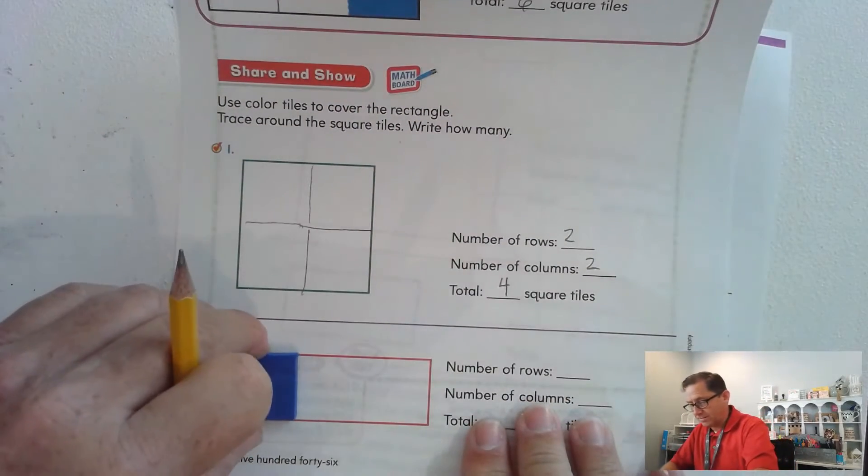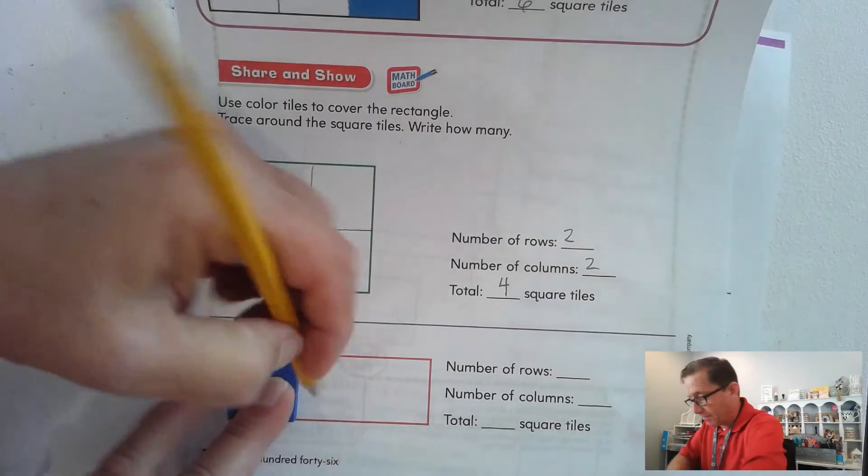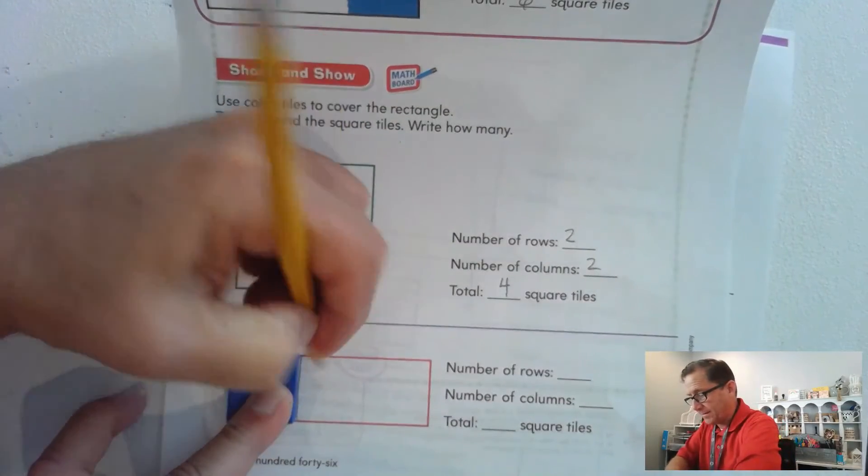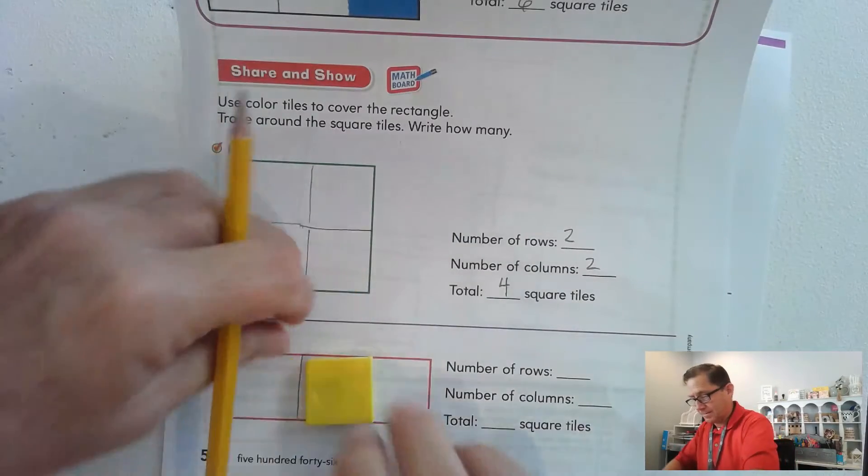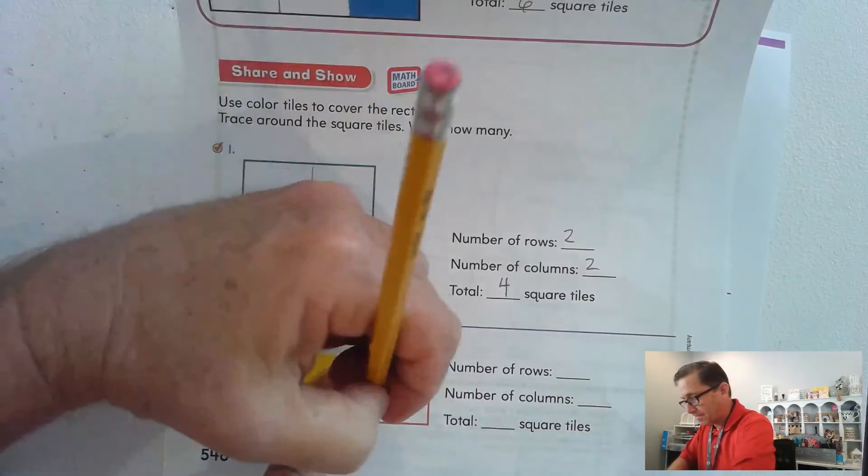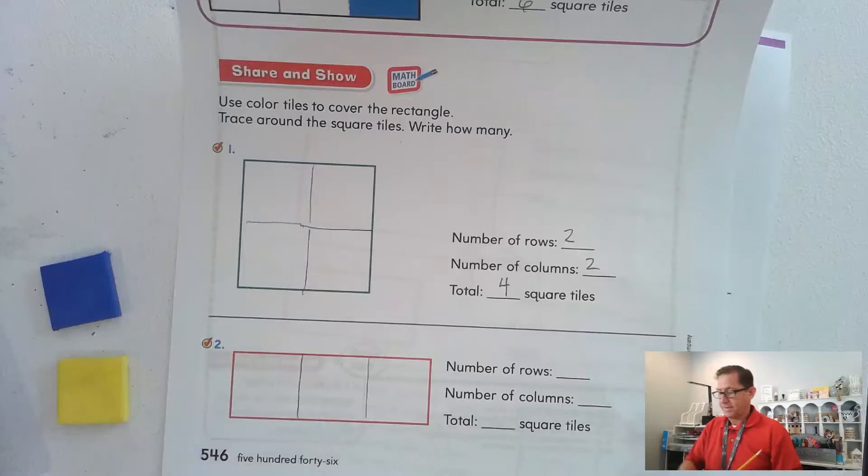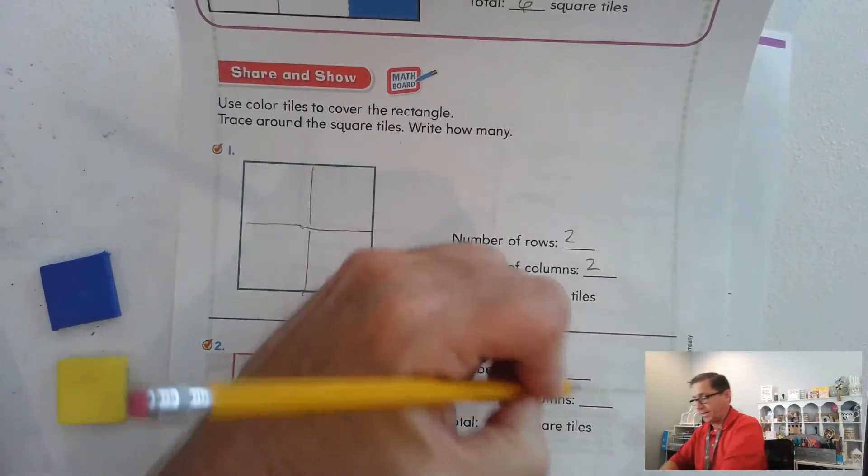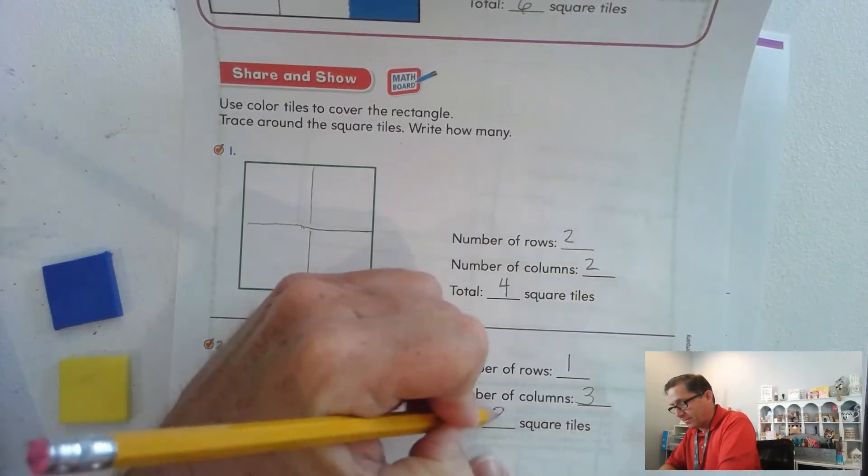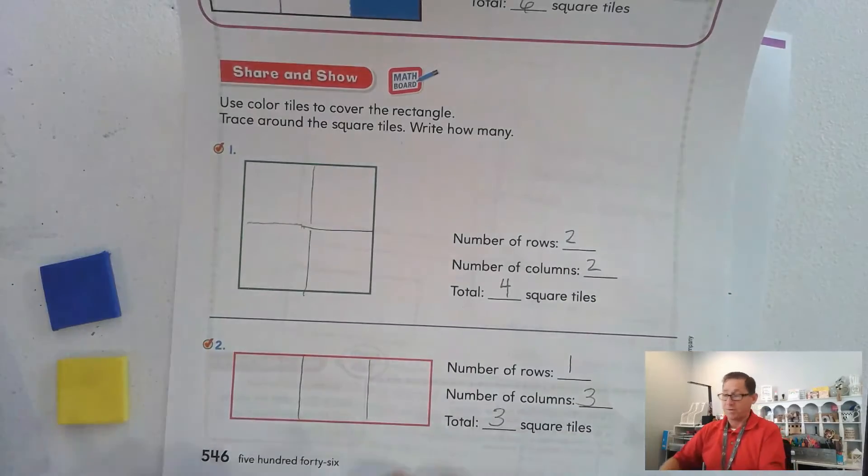In this one, I'm only going to have one row on this one. So we have one row of three for a total of three square tiles.